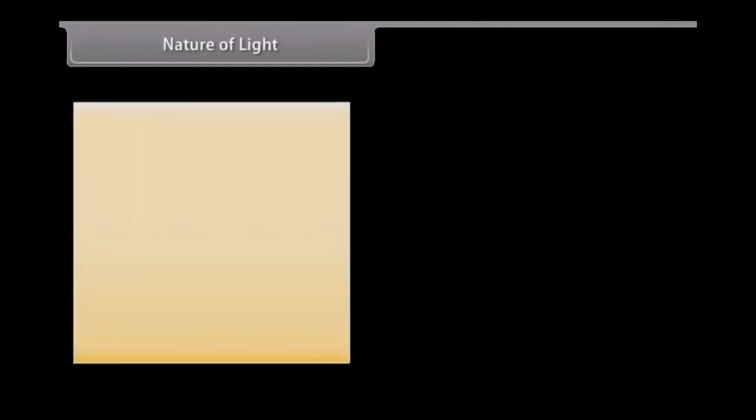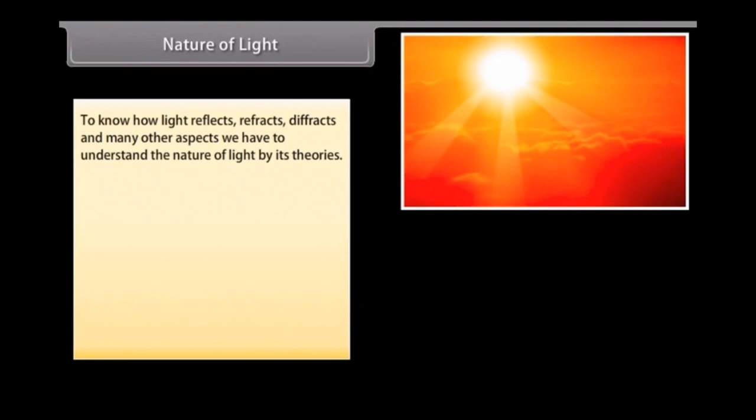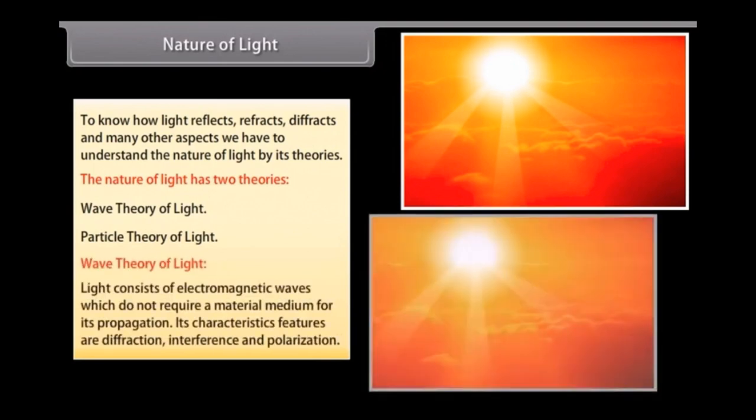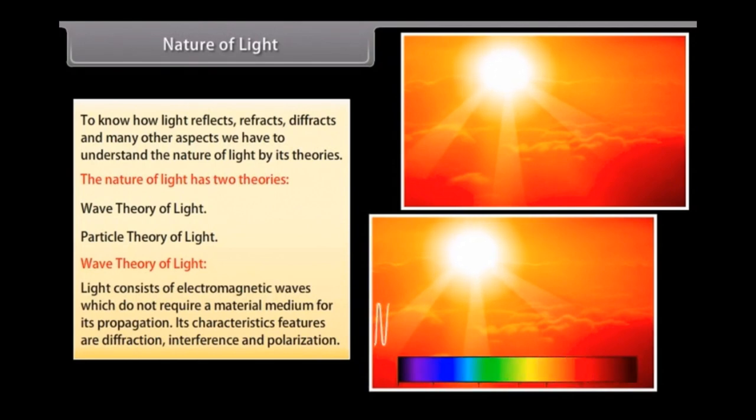Nature of light. To know how light reflects, refracts, diffracts, and many other aspects, we have to understand the nature of light by its theories. The nature of light has two theories: wave theory of light and particle theory of light. Wave theory of light: light consists of electromagnetic waves which do not require a material medium for its propagation. Its characteristic features are diffraction, interference, and polarization.